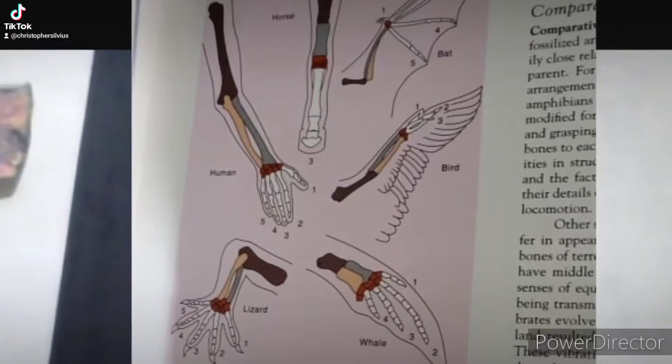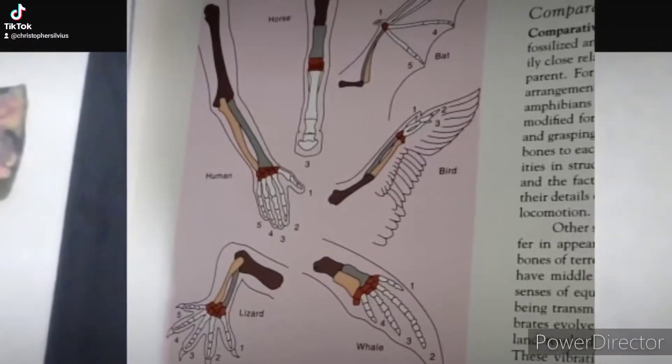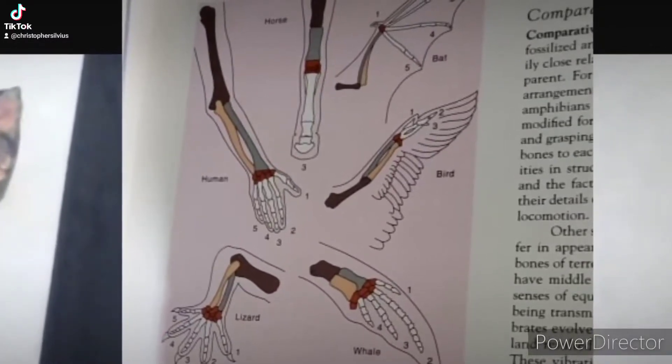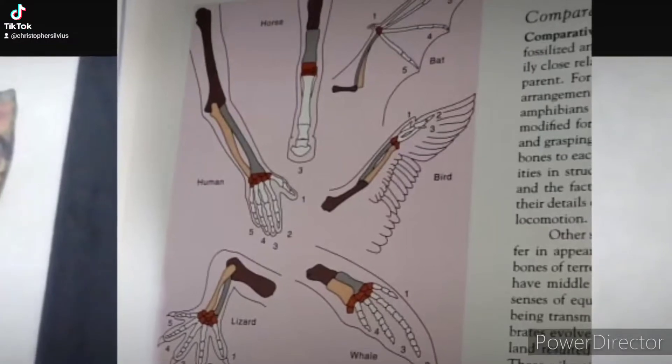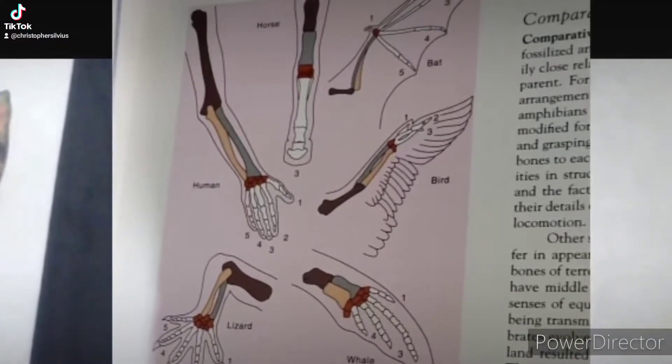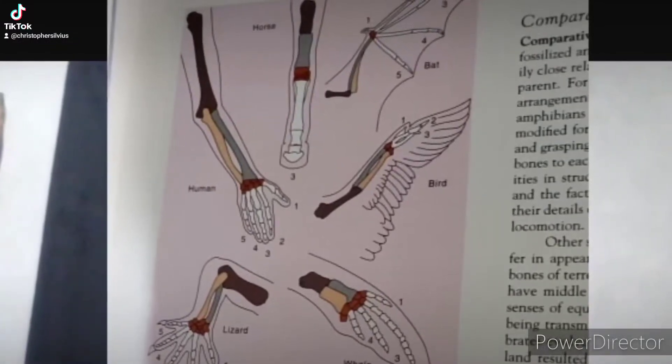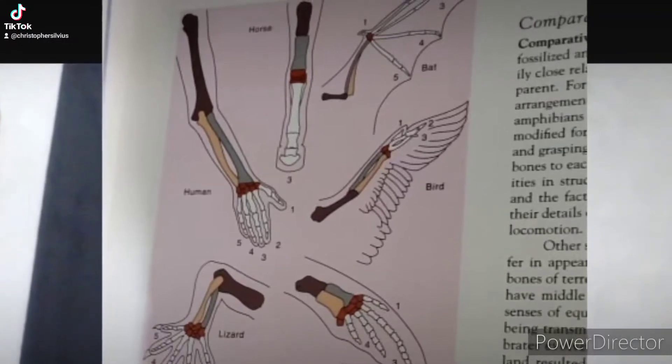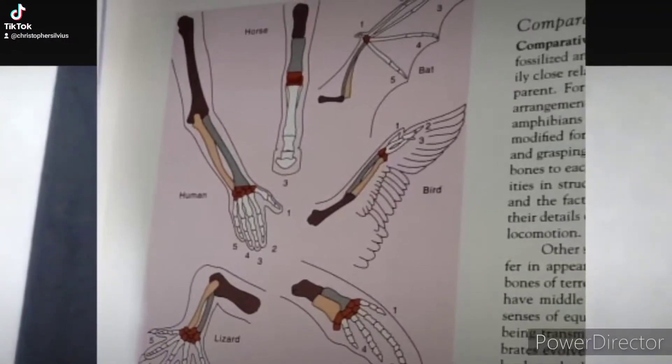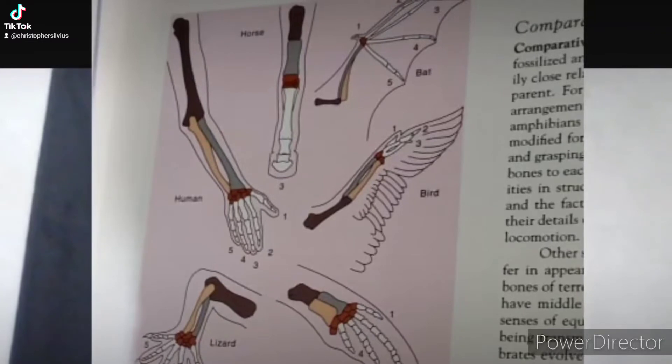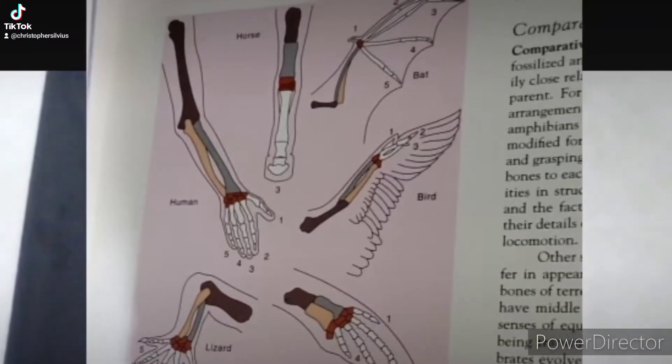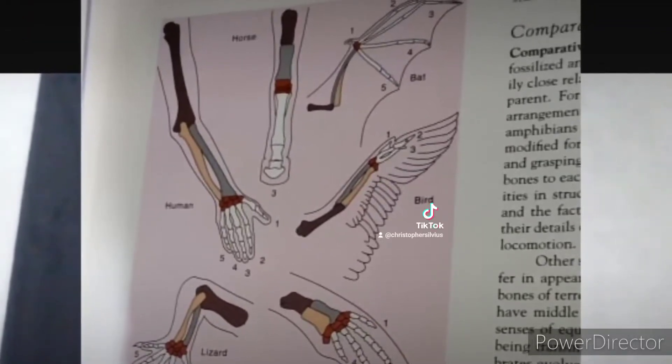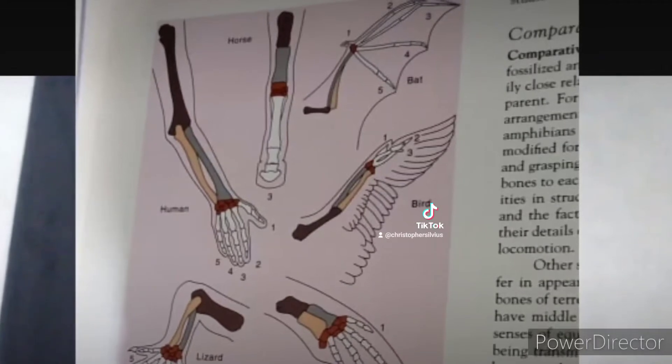All of the structures used on this page 66 in the forelimbs of different creatures, like the whale, lizard, bird, bat, horse, and human, all have like a radius and ulna. That's supposed to show how they all evolved from a bacteria or something long ago and far away.